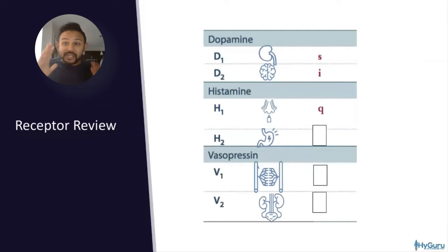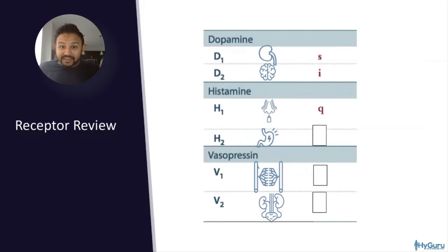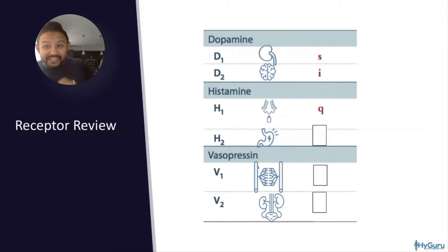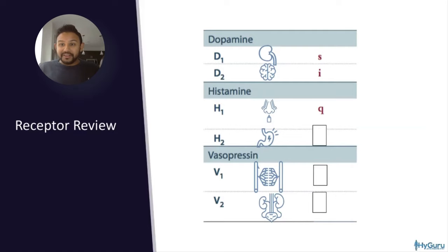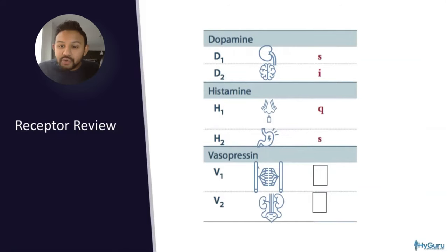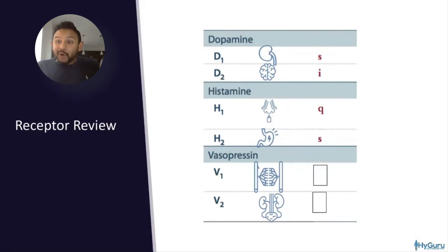H1 is found in the nose; H2 is found in the gut. H1 blockers — diphenhydramine, cetirizine — help with allergies, whereas agents like ranitidine are gut protectants. V1 is found in vessels — similar to alpha-1, it is Gq mediated and causes vasoconstriction. So alpha-1 and V1 are both Gq and both constrict vessels. V2 is found in the collecting duct of the nephron, responds to ADH released from the supraoptic nuclei, and V2 mediates aquaporin insertion into the distal collecting duct.